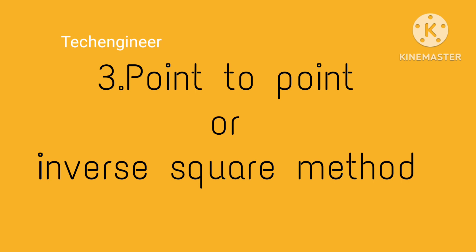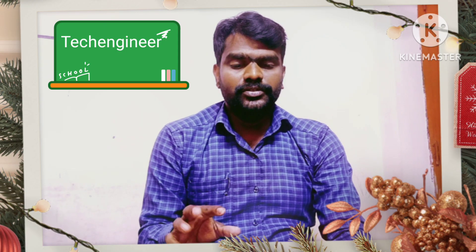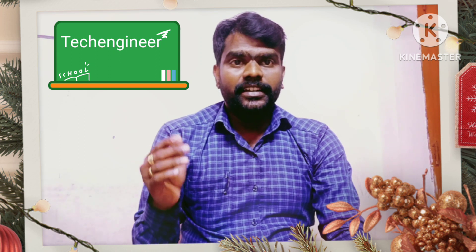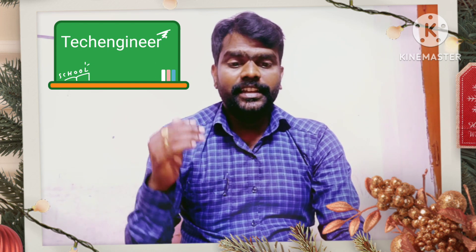The third method is point-to-point, or inverse square method. This method is used when a point has two or more sources of light required. This method is used for detailed illumination calculation.